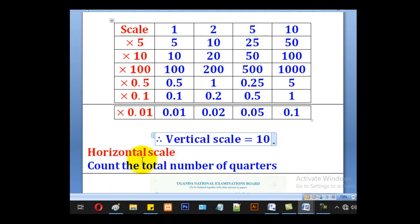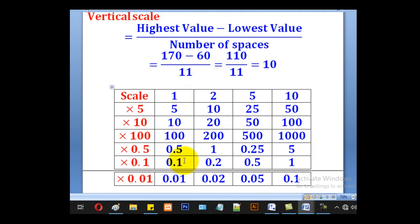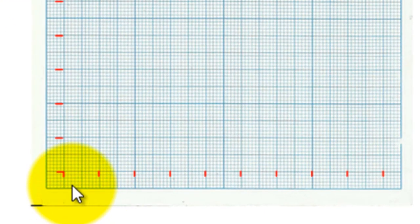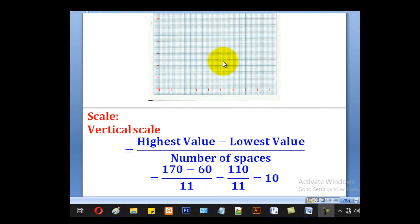For the horizontal scale, we count the total number of quarters. When we go to our table, the total will be 3, 4 times 1, 2, 3 which is 12. So we have 12 and here we have 1, 2, 3, 4, 5, 6, 7, 8, 9, 10. So that means that 12 cannot fit on this horizontal axis.